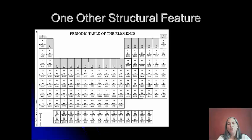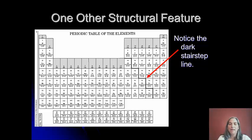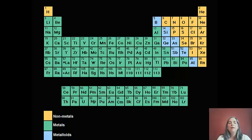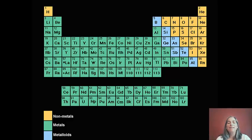Another really important feature is the stair-step line, which is on your periodic table. You may want to darken it on your reference table so you can see it well. It separates the metals, which are to the left of the stair-step line, from the non-metals, which are to the right. Hydrogen is on the left of the stair-step line and is a non-metal — you'll find it's actually an exception quite often to the rules, and chemistry is full of exceptions, so try not to get too frustrated.